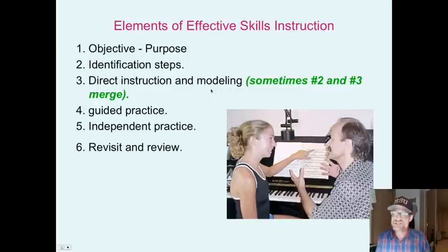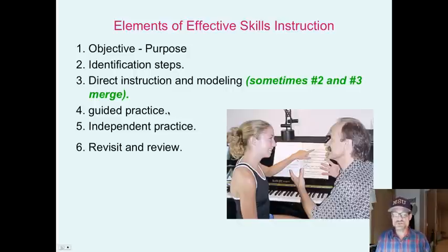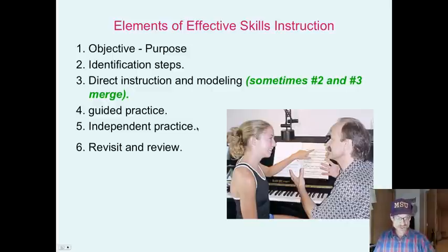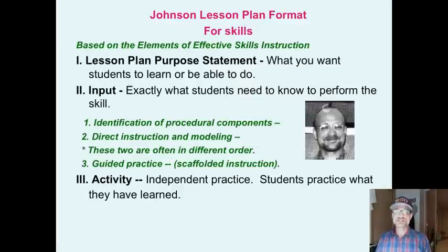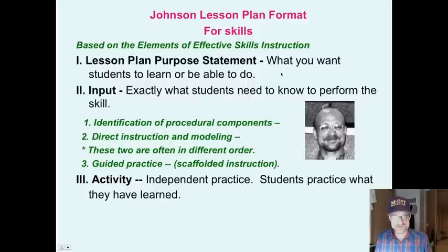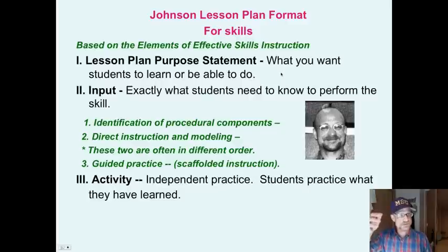This is a skill of any kind — it could be an athletic skill, an academic skill, a musical skill. There is guided practice in which you take the whole group through it together. Then there's independent practice where students are able to practice the skill independently. With any skill, you cannot assume learning after one learning experience; you need to revisit and review. Here is the Johnson lesson plan format for teaching skills: what do you want students to learn or be able to do? For example, students will learn a particular guitar strum.